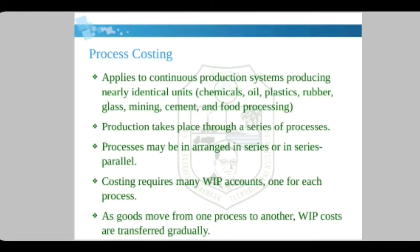Examples include glass, mining, cement, and food processing. In food processing there are two processes: first is cooking and second is freezing. Production takes place through a series of processes — process one then process two — or processes may be arranged in series-parallel, where two to three processes run in parallel and at the end the product gets assembled.